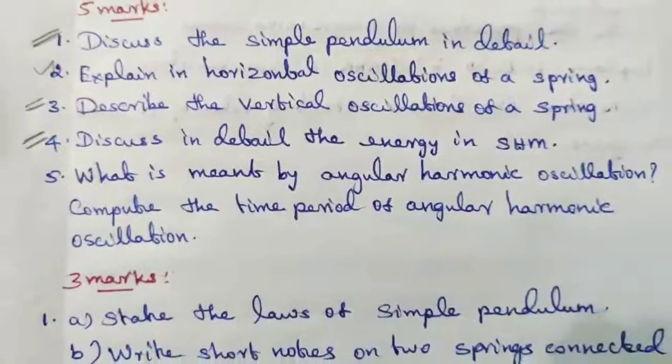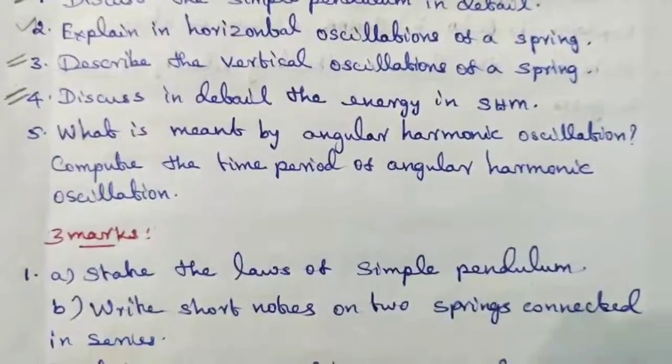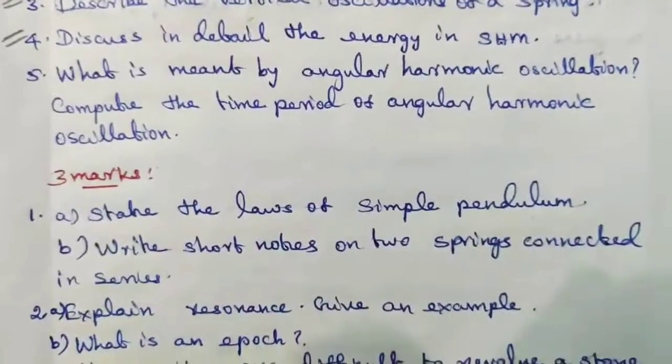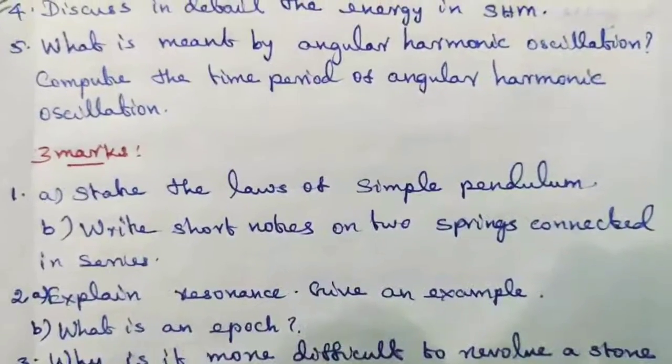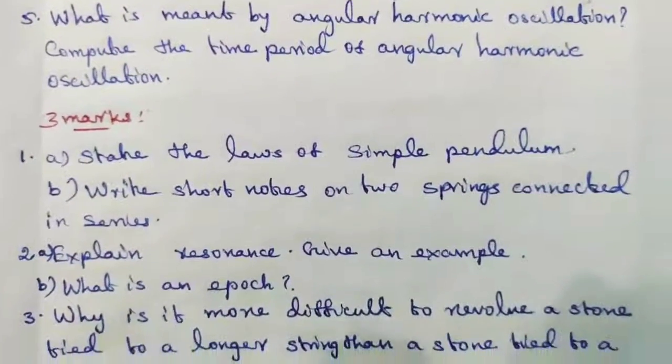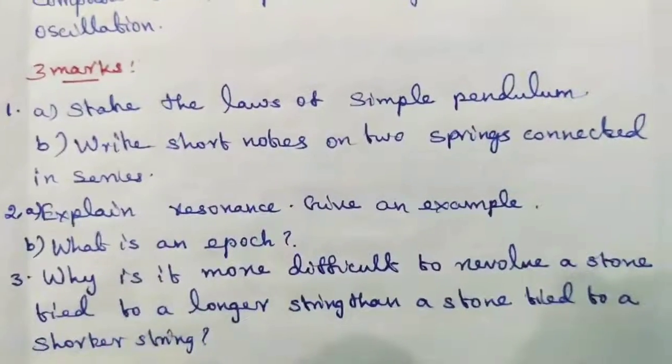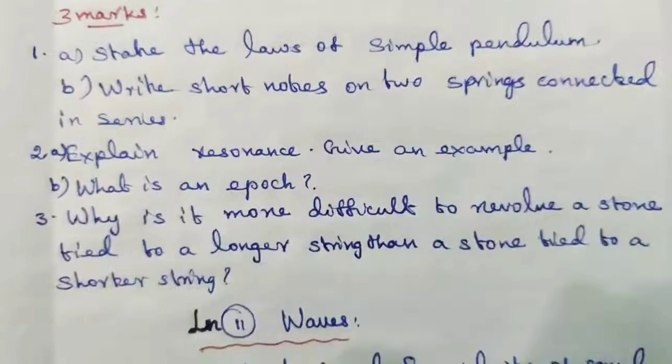Question 1: State the laws of simple pendulum. Write short note on two springs connected in series. Explain resonance, give an example. Why is it more difficult to revolve a stone tied to a longer string than a stone tied to a shorter string?